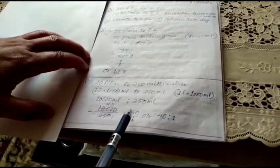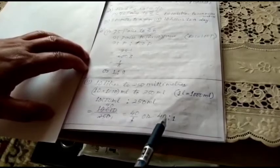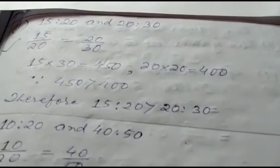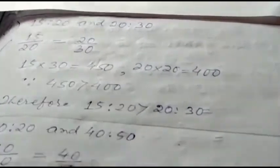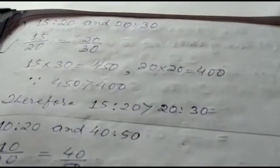Next, children will take two ratios—15 is to 20 and 20 is to 30—and compare which one is greater. Let's write 15 by 20 and 20 by 30.